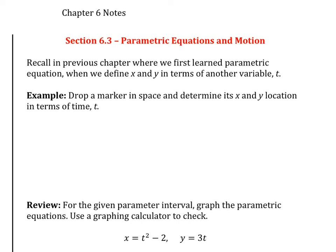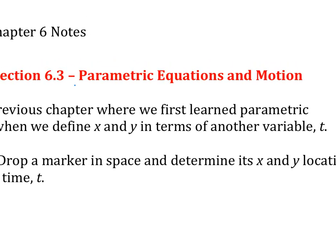We actually already did 6-3 before in a previous chapter. That was the one where instead of just saying something is graphed by x and y direction, we said that both of them are going to move with time. We call that time t. So in the x direction, it's moving according to time, and in the y direction, it's moving according to time. Then both of them are defined with this additional variable t. And this is basically called parametric.